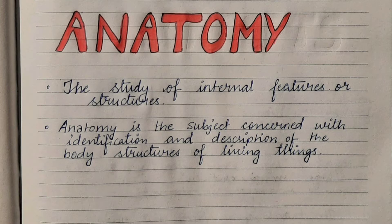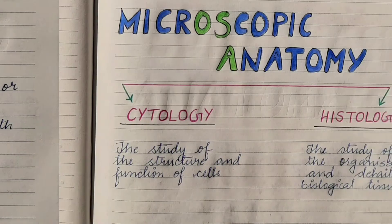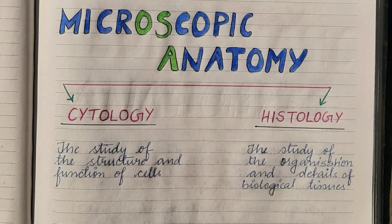Basically in medical sciences we read the anatomy of human beings. The term anatomy derives from an ancient Greek term meaning dissection, or to dissect, and it involves the study of the structure of the human body.